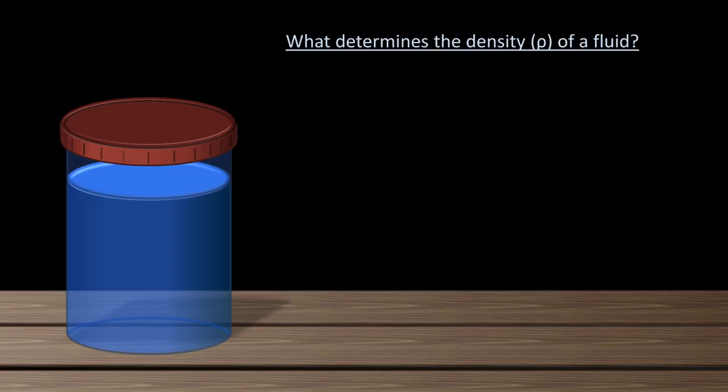Now let's talk density. I'm sure all of you have some idea what density means. It's a measure of how much stuff is squeezed into how large a space. For example, a steel bar is very dense, while styrofoam is not. When it comes to fluids, there are a number of properties that determine their density. You'll notice that the universal symbol for density is this round lowercase p, that's actually the Greek letter rho.